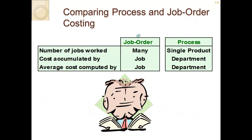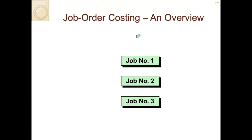Comparing process and job order costing: for job order, you have many different jobs and accumulate costs by job — job number one, job number two, job number four thousand — each with their own associated costs, and average cost is computed by job. For process costing, like Coca-Cola manufacturing different products such as Coke and Diet Coke, they accumulate costs by department and calculate average cost per department.